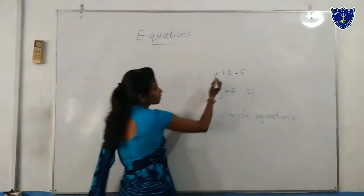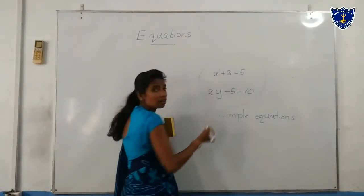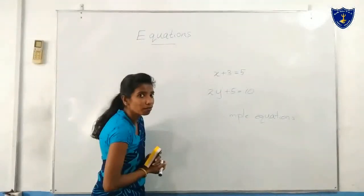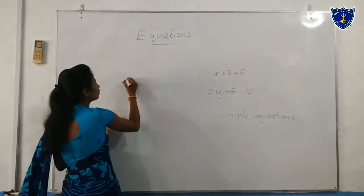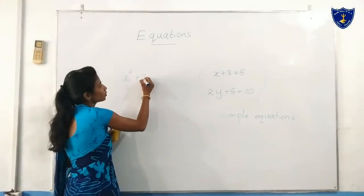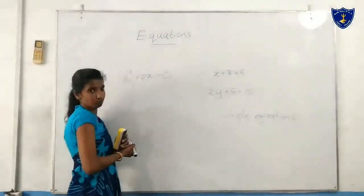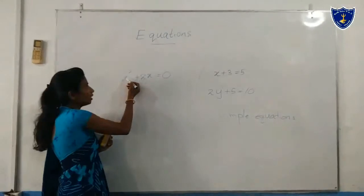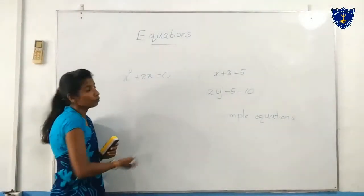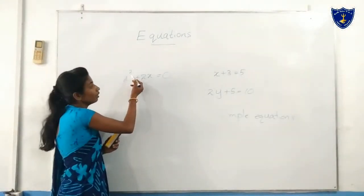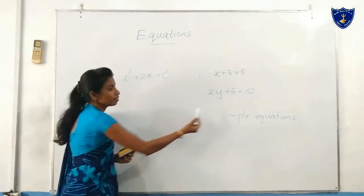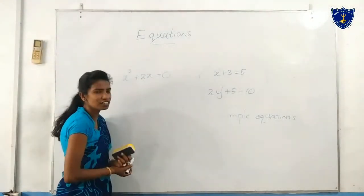Here we can see x to the power of 1, and here also we can see y to the power of 1. But what about x to the power of 2 plus 2x equals c? Here we can see x to the power of 2. This is not a simple equation — that is a quadratic equation.